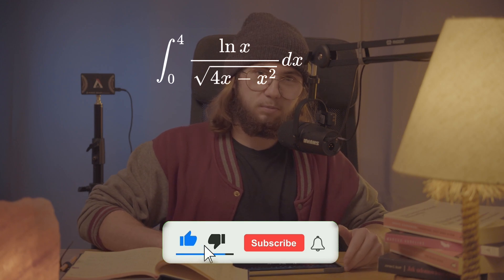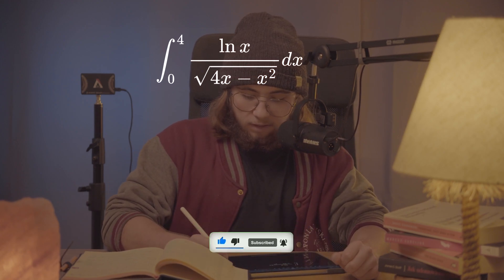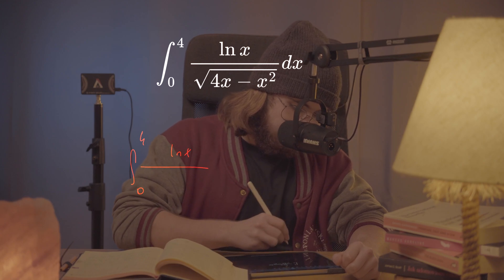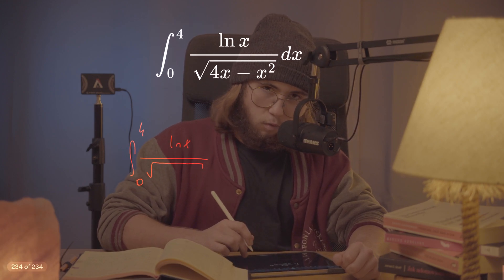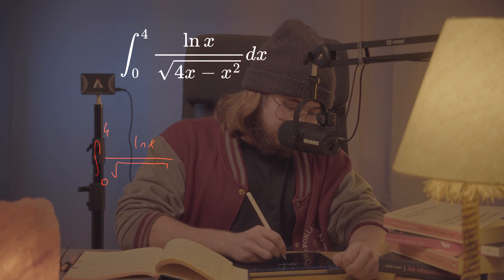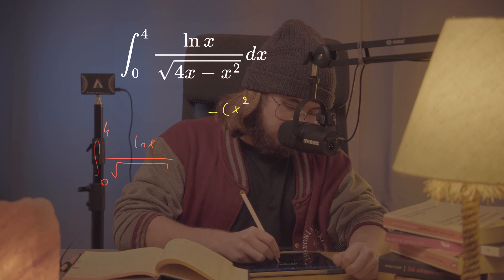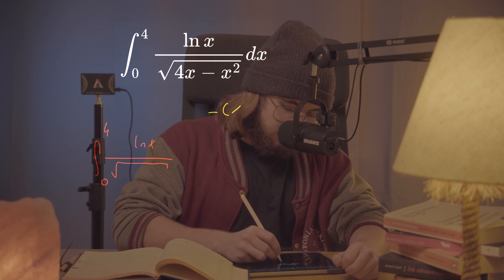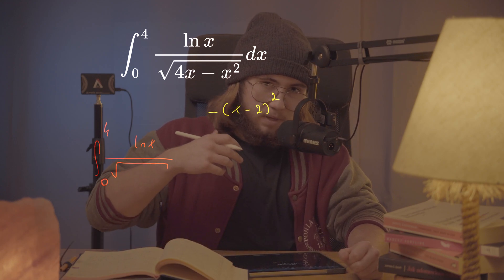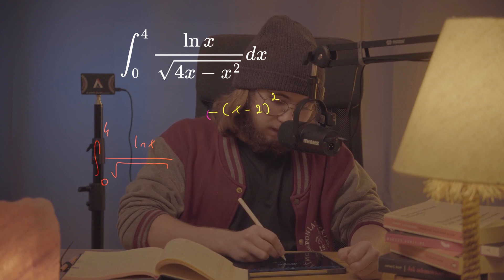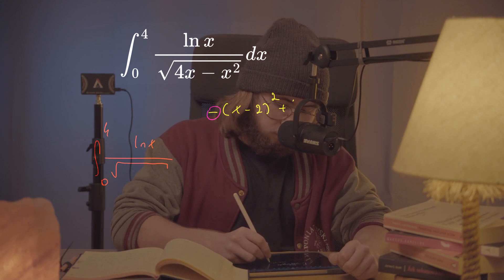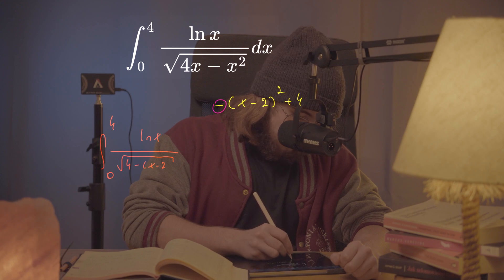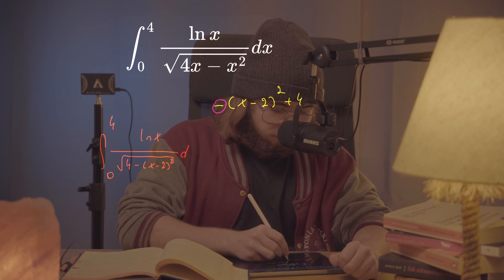So how are we supposed to solve this problem? First of all, I'd like to complete the square in the denominator. I'd like to rewrite the integral as the integral between 0 and 4 of the natural log of x divided by the square root of negative x squared minus 4x. Adding 4 lets me write that as x minus 2 all squared, but because of the negative sign I also subtract 4, giving me the square root of 4 minus x minus 2 all squared, with respect to x.